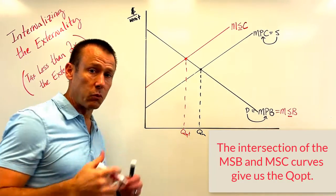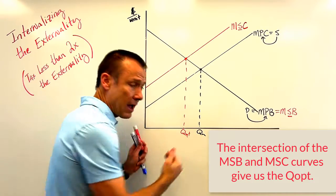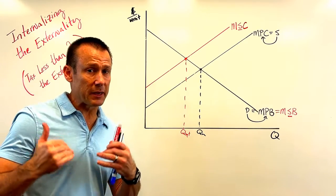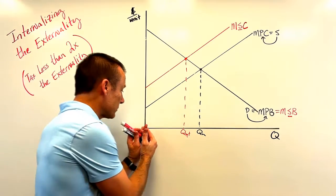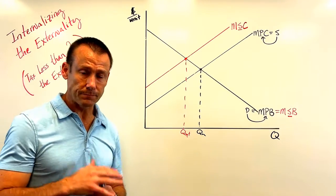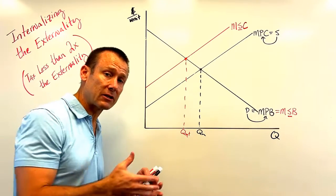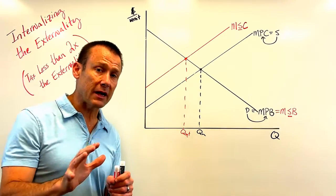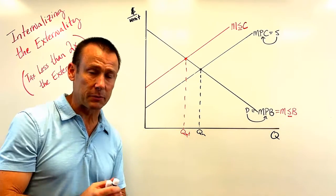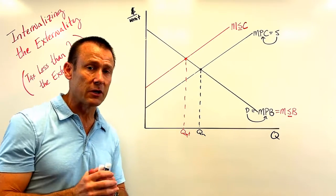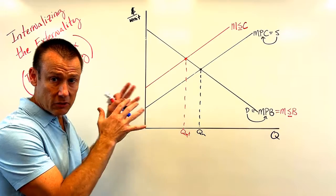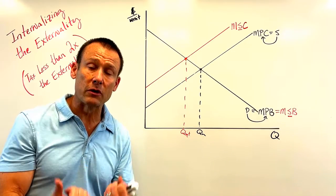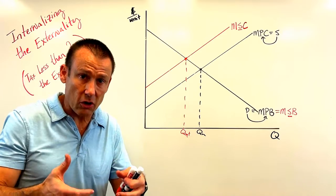The market would over-allocate resources to production of this good. Suppliers and demanders making decentralized decisions based on their private interest would give us a result where the market over-allocates resources to production of the good. So what should we do? We should get those market actors to internalize these external costs. We can do that with a per unit tax, which only impacts and is paid by the market participants — the suppliers and demanders. Society, and perhaps the government, recognizes the externality and wants market participants to internalize it.